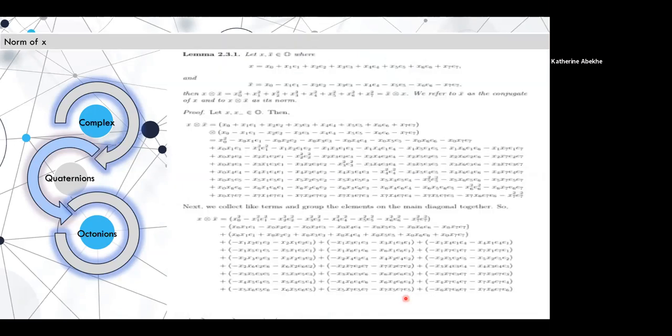Next, we show a simple lemma about the norm of x that we proved using the postulates from the previous slide. We let x be an octonion and x̄ be its conjugate. Now we say that x times x̄ is the same as x̄ times x, and that is actually the norm of x.